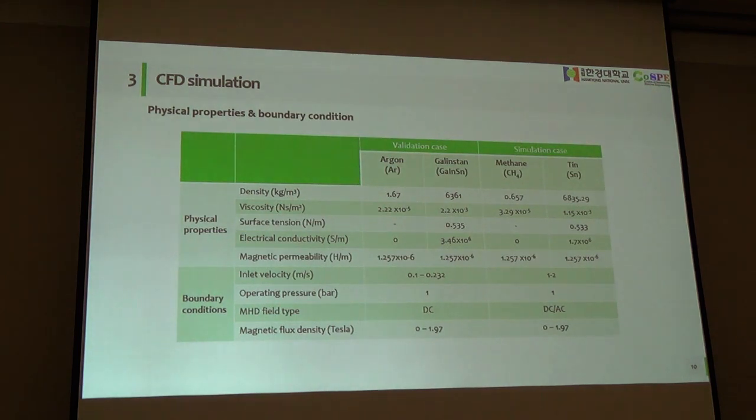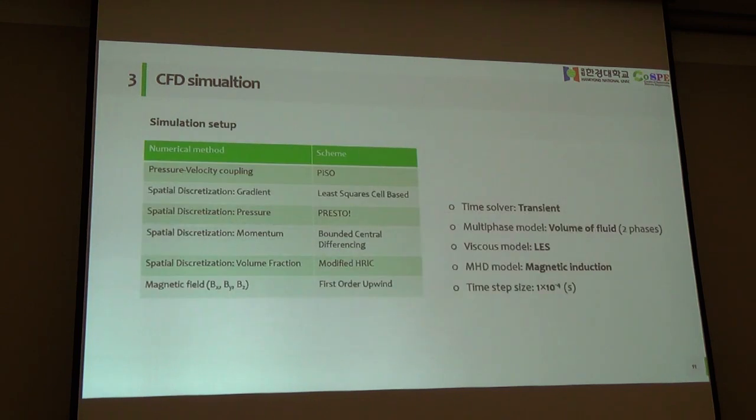This is the physical properties and boundary condition for simulation. In the simulation case, I change the gas and liquids to methane and tin liquid metals to produce hydrogen. This is some simulation setup, the scheme for numerical method, and some information for setting up.